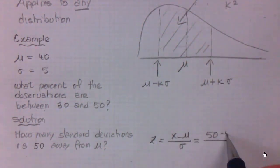x is 50, the mean is 40, and σ is 5, so we're going to get 10 over 5, which is 2.